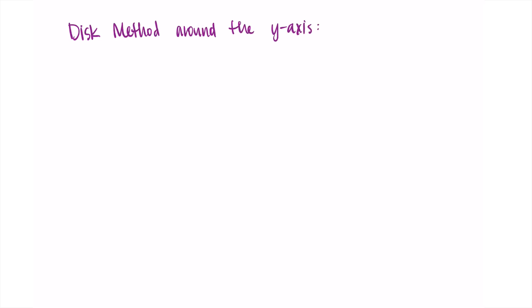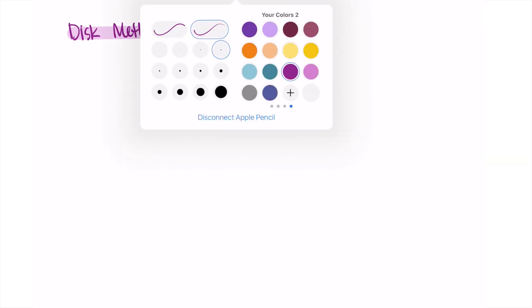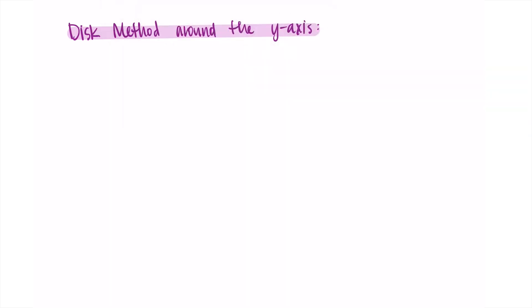Welcome back. We're going to keep talking about finding the volumes of solids of revolution, and we're still using the disk method — this time just around the y-axis. This is going to look very similar to doing it around the x-axis. With the x-axis we used dx, so you can imagine here we're probably going to use dy. If you had any difficulty understanding where the formula came from for the x-axis, maybe seeing it again will help you solidify that.